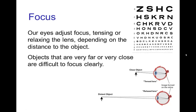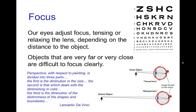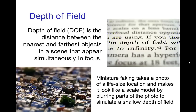Yet another visual cue is focus. Our eyes focus by tensing or relaxing the lens depending on the distance, and things that are very far away are difficult to focus clearly. Leonardo da Vinci noticed these various effects and wrote that perspective in painting is divided into three parts: the first is the diminution in size — referring to geometric perspective; the second deals with the diminishing in color — referring to atmospheric perspective; and the third is the diminution of the distinctness of shapes and boundaries — referring to focus and probably also depth of field.